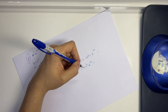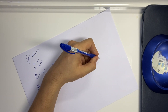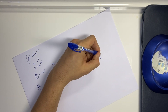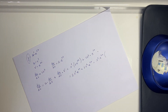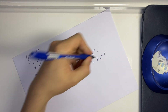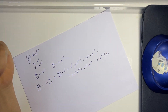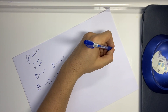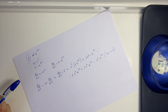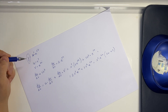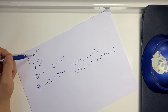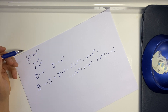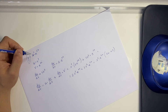You can factor out x²·e^(2x) from both terms, giving x²·e^(2x) · (2x + 3). And that's it. So here we applied the product rule — sorry, I said chain rule but it's the product rule.